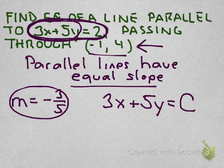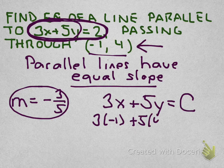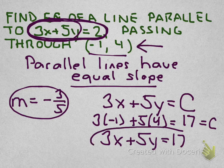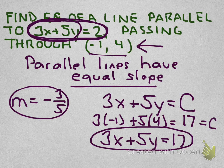Well, we can find C by using the point here. Negative 1, 4. I have 3 times negative 1 plus 5 times 4. Do a little math. That comes out as 17. That equals C. So I find the equation of the line is 3x + 5y = 17. And 3x + 5y = 17 is parallel to the line at the beginning of the problem and goes through the point that we were given. So you notice 3x + 5y being the same in both of them because they're parallel lines is really what made this all work.